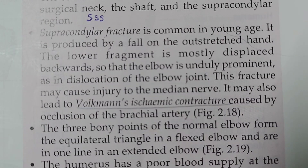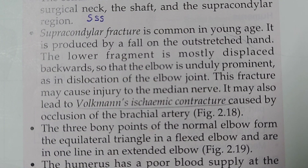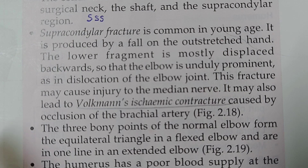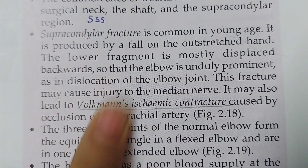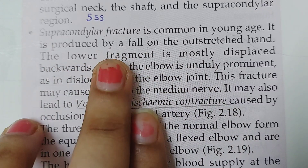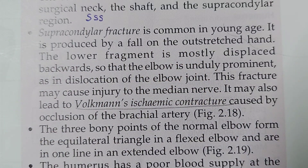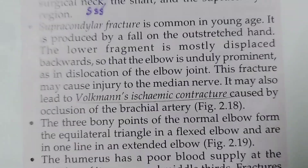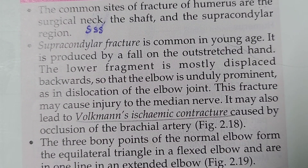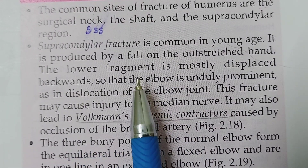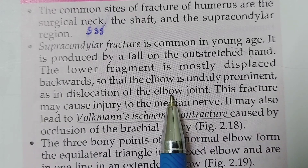Next in clinical anatomy: supracondylar fracture. This fracture is common in young age. It is produced by a fall on the outstretched hand. The lower fragment is mostly displaced backward, so the elbow becomes prominently visible from the back — similar in appearance to a dislocation of the elbow joint.